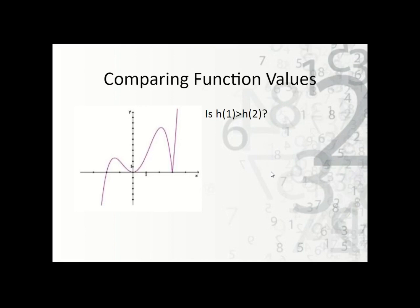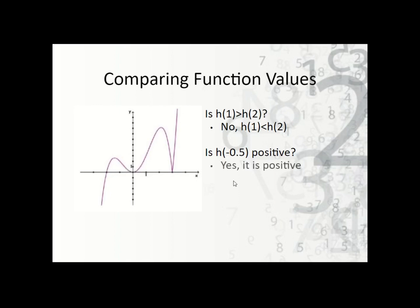Now let's look at how we can compare function values. Is h of 1 greater than h of 2? If we find where x is 1 and where x is 2, we can see that x equals 2 is higher, so no — h of 1 is less than h of 2. Is h of negative 0.5 positive? At about negative one half, the graph is above the x-axis, so yes, it's positive. How many numbers map to 1? When y is 1, there are 5 values that map to 1.